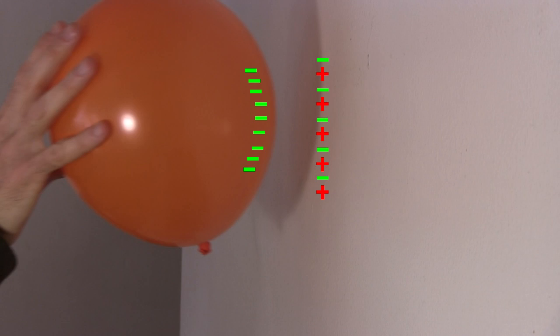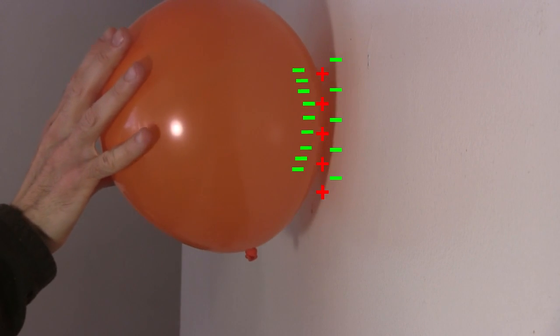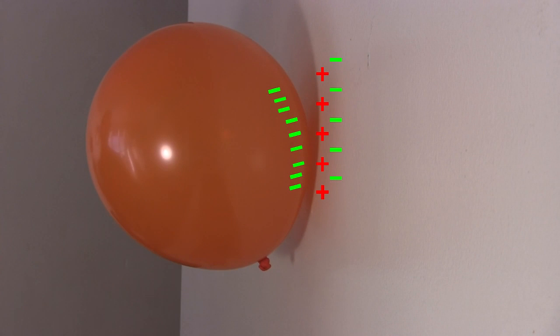But like charges repel each other, so the negative charge of the balloon repels some of the negative charge on the wall, deeper into the wall, leaving a more positively charged surface. And unlike charges attract each other, so the negatively charged area of the balloon is attracted to the positively charged surface of the wall.